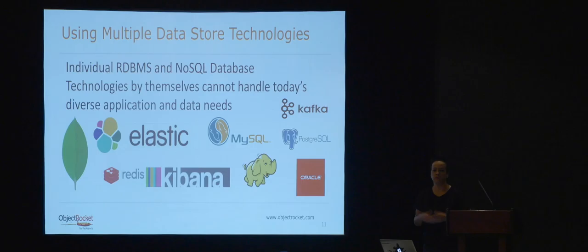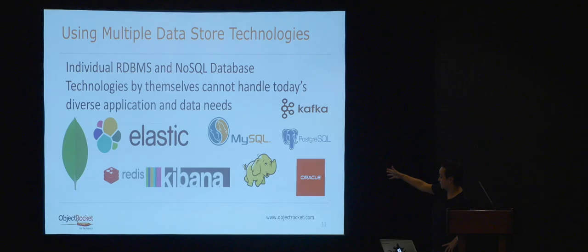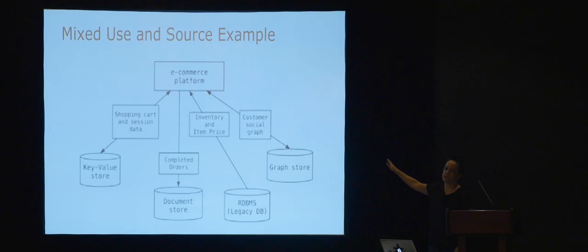You can't use just one anymore. We're no longer in the world of what my colleague calls 'monoglot' — it's now polyglot. You have to utilize particular ones. SQL databases and NoSQL databases can't handle everything on their own. Some of the ones we support at ObjectRocket include Postgres and Oracle, and we'll support additional ones soon. This is a simple view of why you do different things for an e-commerce platform.